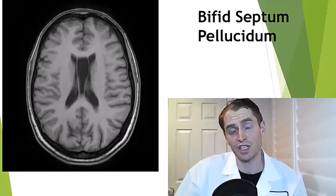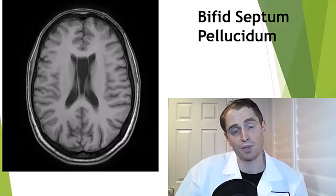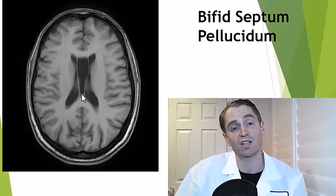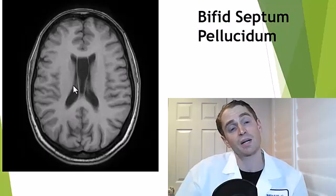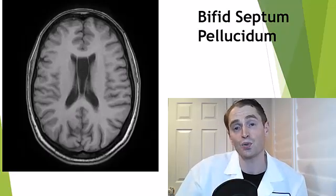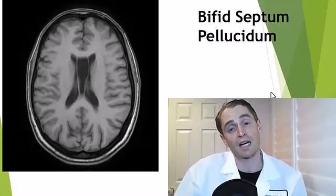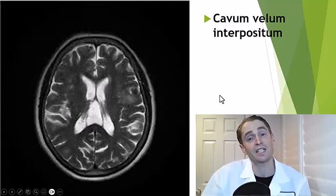Next, we look at some variation of the midline structure: the septum pellucidum. Normally the lateral ventricles — these fluid-filled spaces — are divided by a single fibrous septum pellucidum near the midline, but sometimes it's separated into two, known as a bifid septum pellucidum. Sometimes only the posterior aspect is divided, known as cavum velum interpositum.